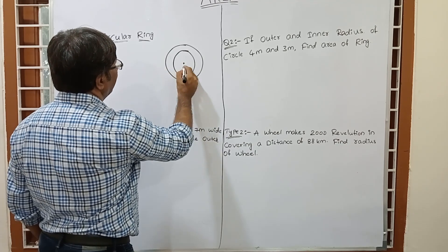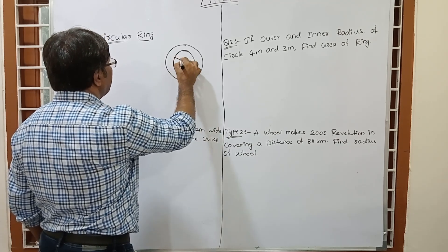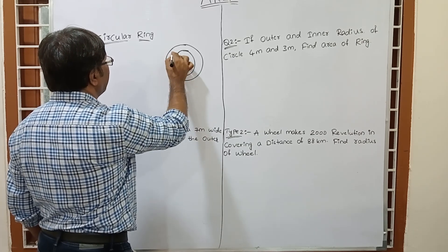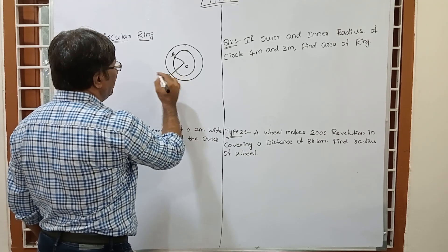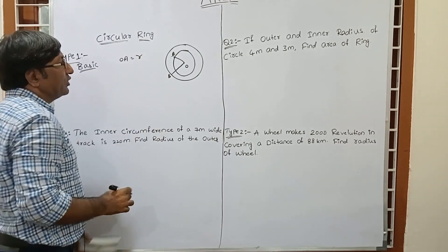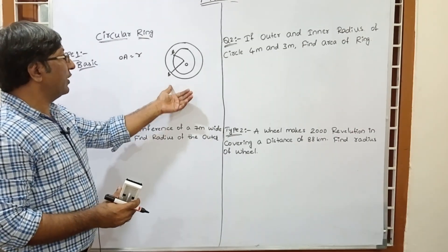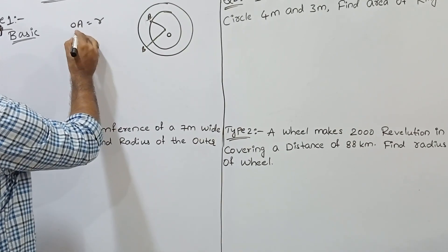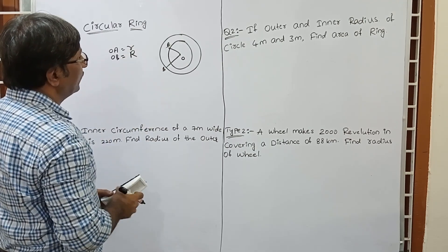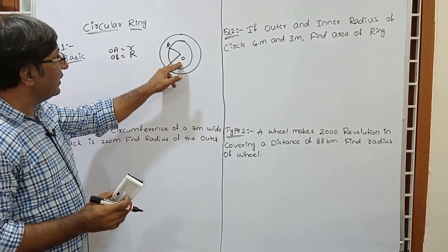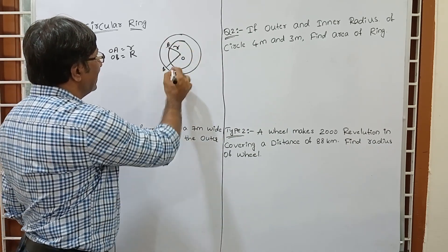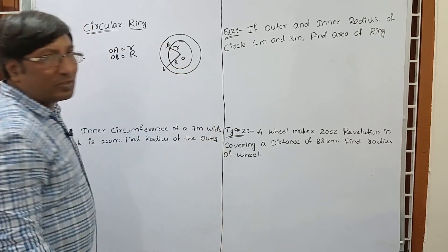This is the center O. This is the radius and this is the one ring. Suppose this point is A and this point is B. OA is a small r — it is called the inner radius of the circular ring. And OB is the outer radius of the circular ring.